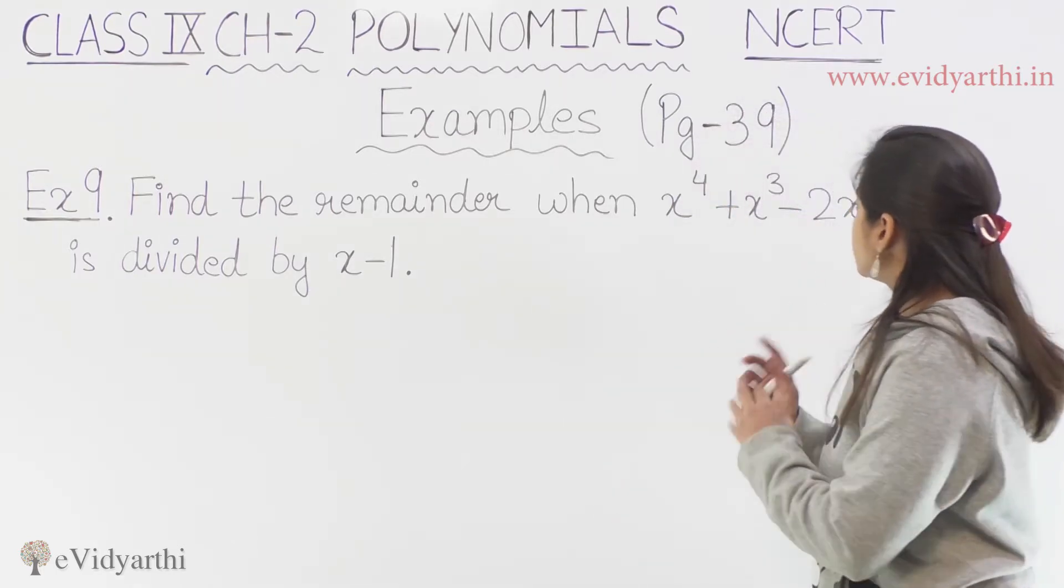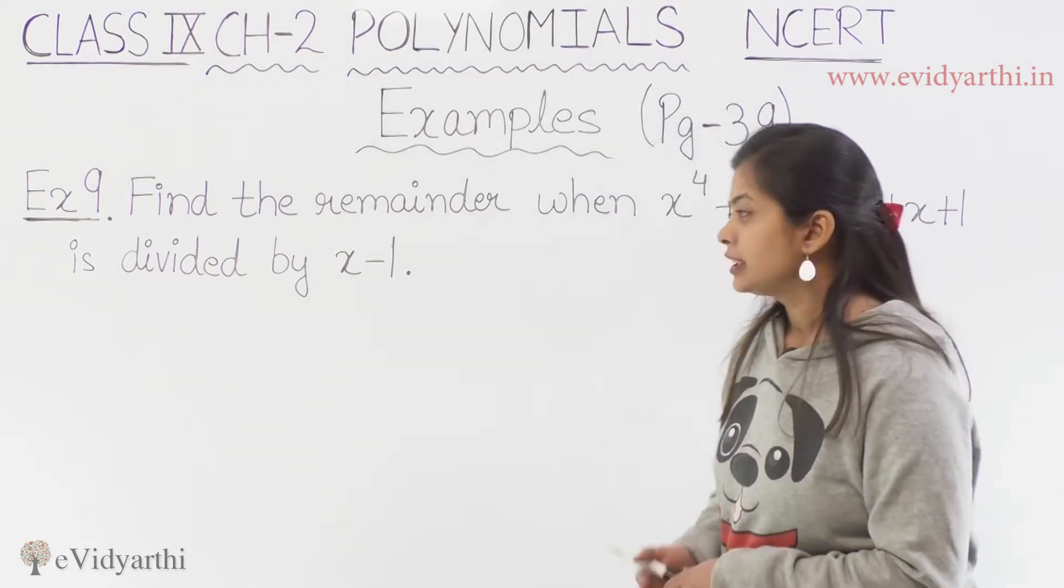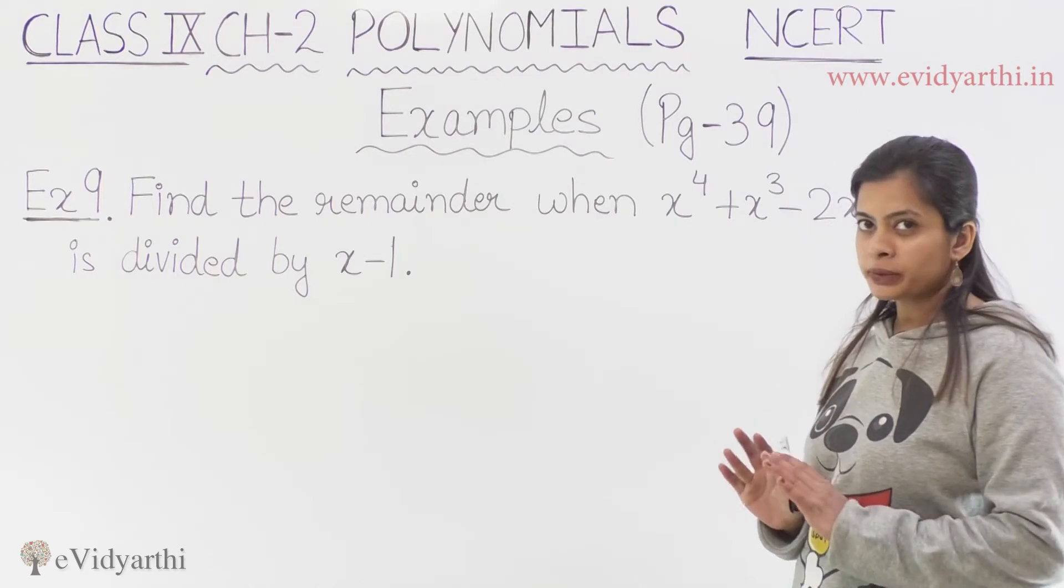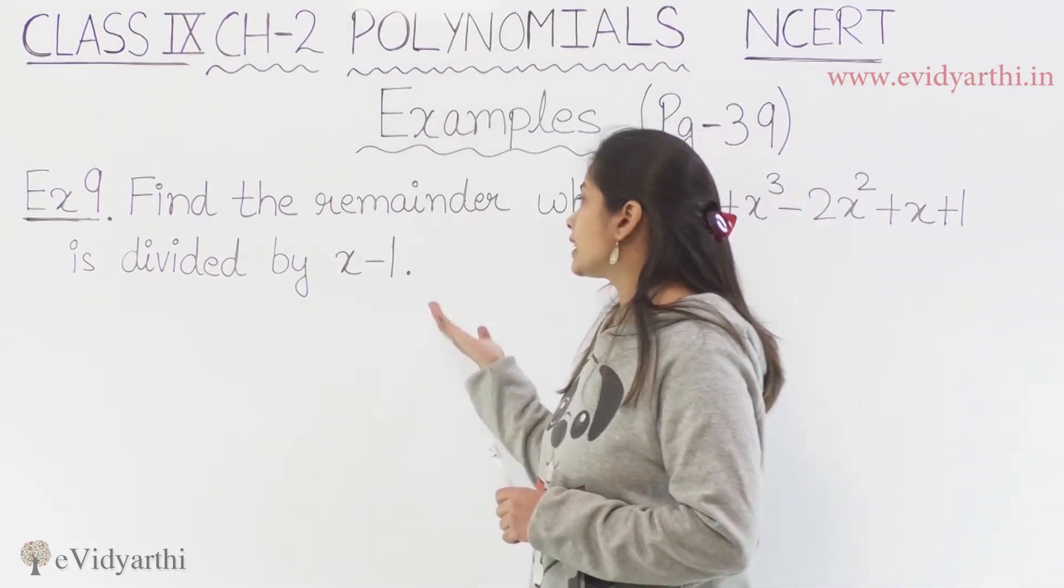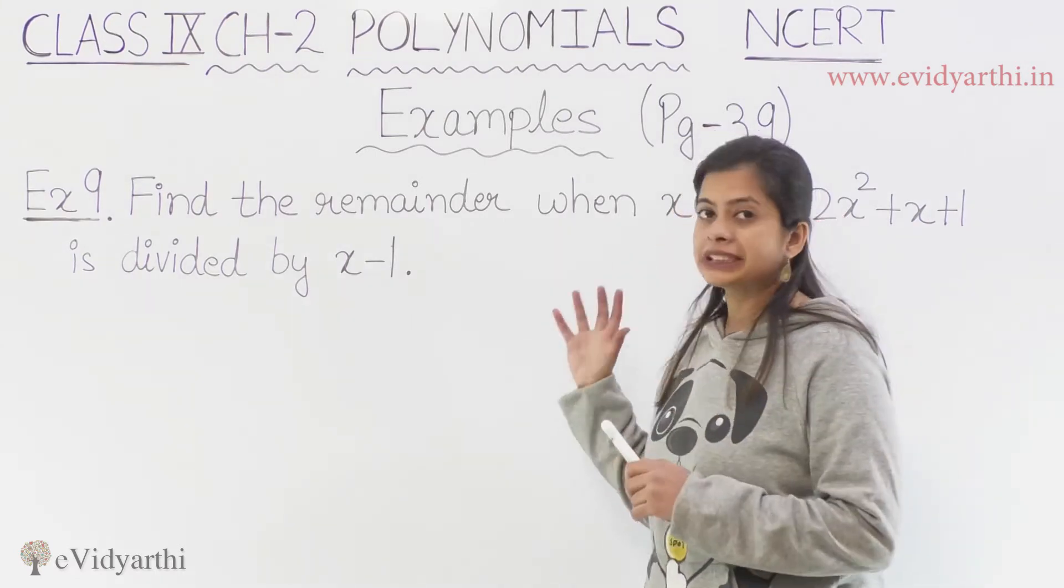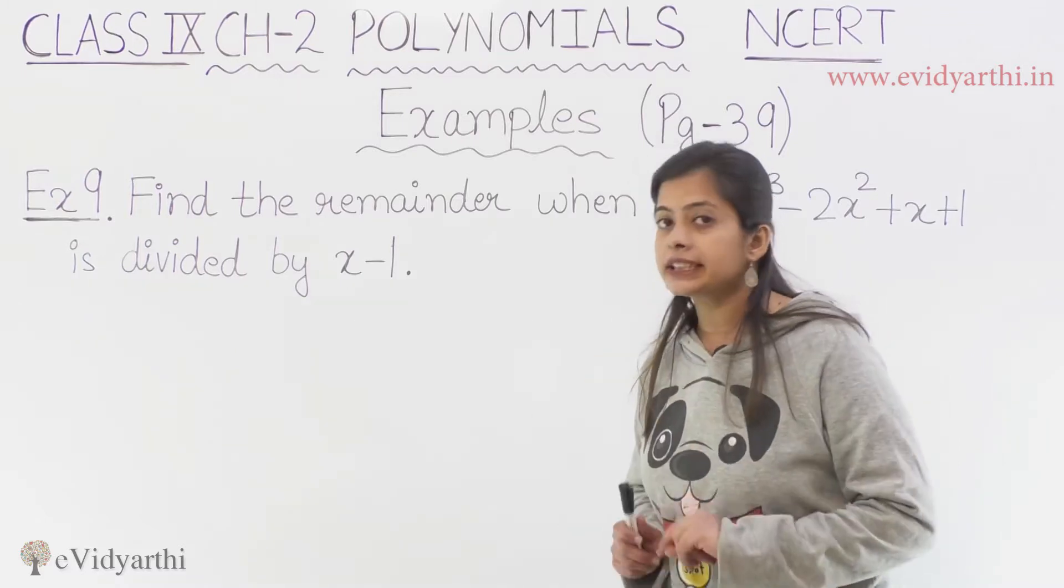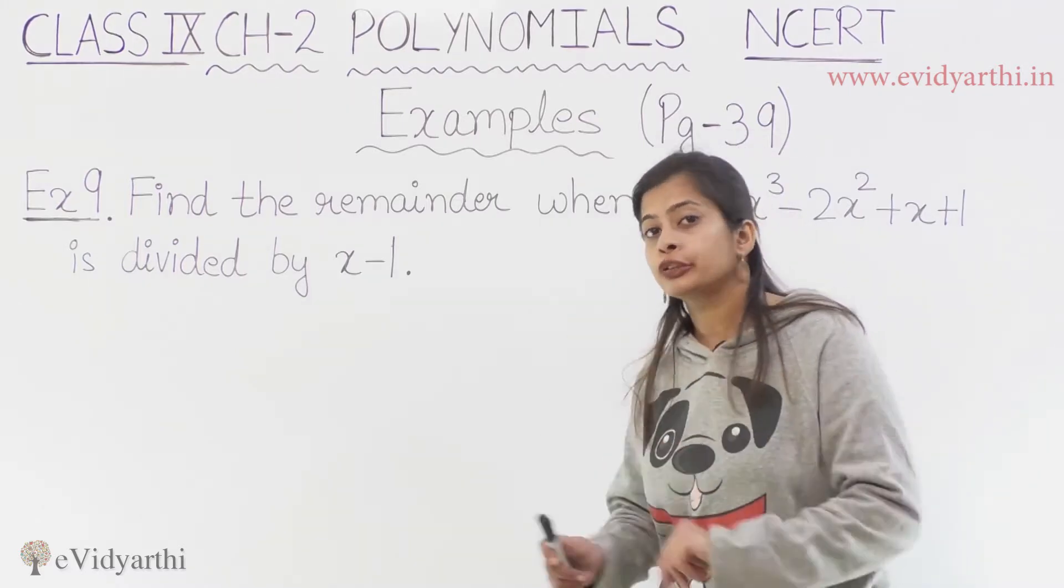Find the remainder when the whole polynomial is divided by x minus 1. So now we have a huge polynomial. Ab hume isse divide karna hai by x minus 1 to find the remainder. But now, ab hum isse example ke liye division method use nahi karenge. Instead, we will use remainder theorem.